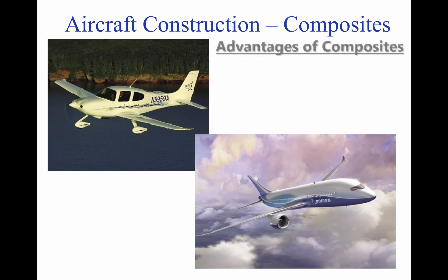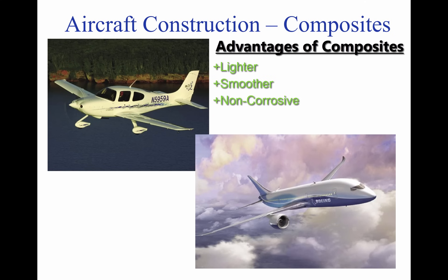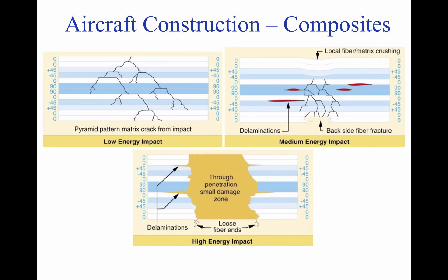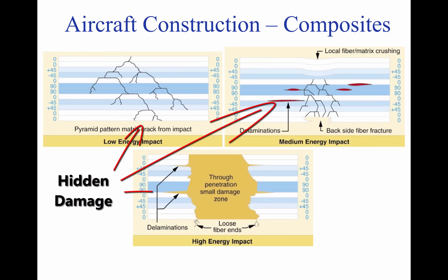Composites have their advantages: they are lighter than materials like wood and metal, they are smoother which allows for less drag, they do not corrode or rust, and they flex without suffering from metal fatigue or crack growth. Some disadvantages include the difficulty in spotting damage. Composite materials, when impacted, may show no signs of damage on the surface, but underneath they may have extensive cracking.